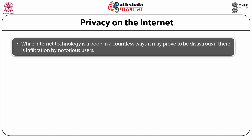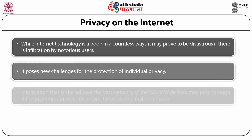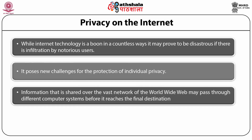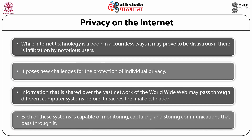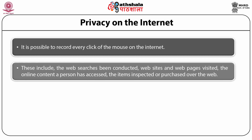While internet technology is a boon in countless ways, it may also prove disastrous if infiltrated by notorious users. It poses new challenges for the protection of individual privacy. Information shared over the vast network of the World Wide Web may pass through different computer systems before reaching its final destination; each of these systems is capable of monitoring, capturing, and storing communications that pass through it. It is possible to record every mouse click on the internet — web searches conducted, websites and web pages visited, online content, and items inspected or purchased over the web — much of this tracking done without the visitor's knowledge.